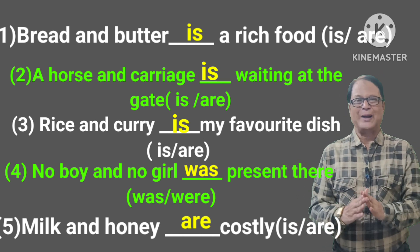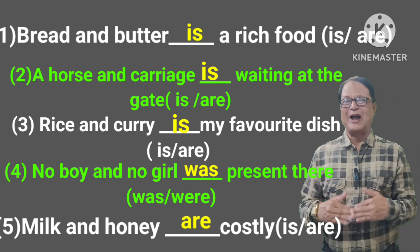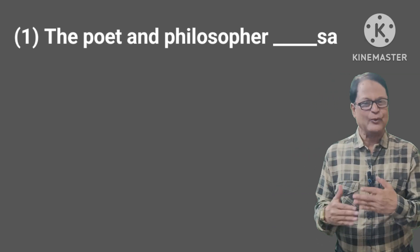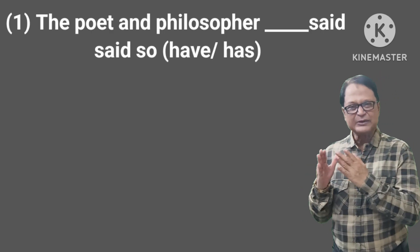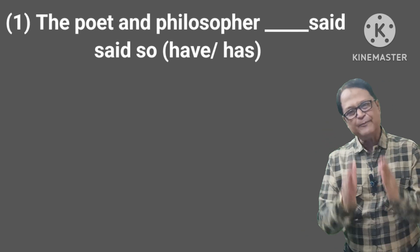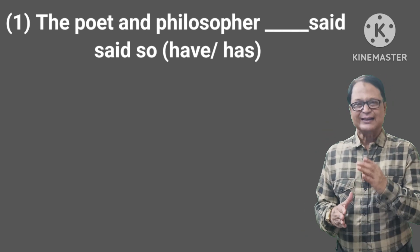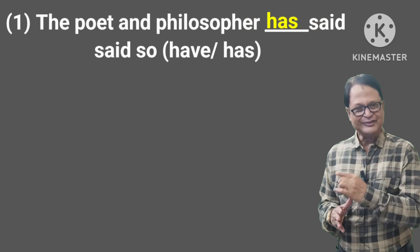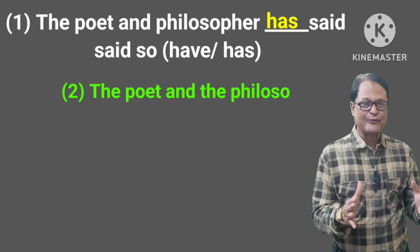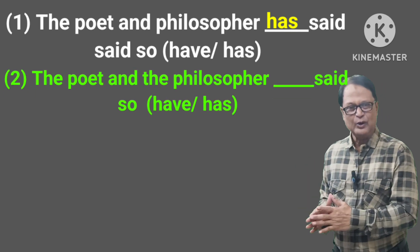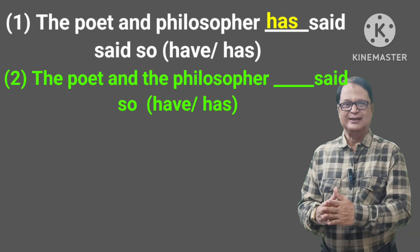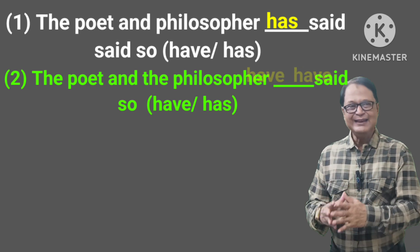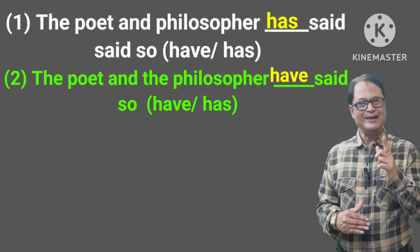I hope you have understood these five sentences. Next five sentences: The poet and philosopher — dash — say so, has or have? Here the poet and philosopher refers to the same person, so 'has' is used — it is singular. Next: The poet and the philosopher — dash — say so. Here, by using the definite article 'the' before both, we separate the two persons, so 'have said so' — plural.